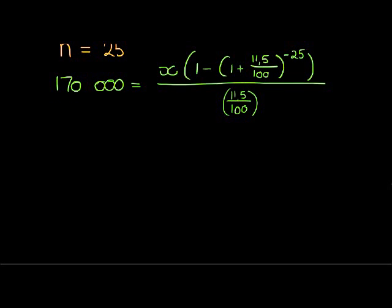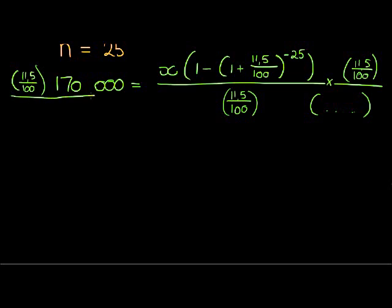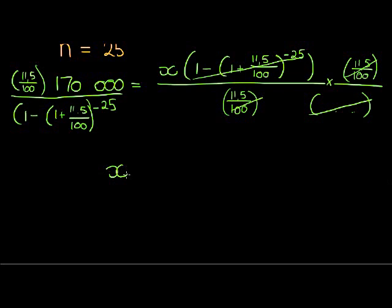And with that in mind, we can simply now solve for X. And to solve X, we must multiply both sides with 11.5 over 100, and divide both sides with this top bracket. So I'm not going to write it all out. I'm going to multiply with 11.5 over 100, and divide both sides with this bracket, which is 1 minus 1 plus 11.5 over 100 to the power of negative 25.